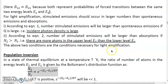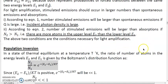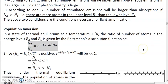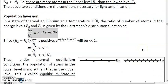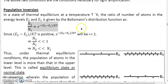To understand population inversion, first we will talk about what is meant by normal state. Based on that understanding of a normal state, then we will define what is meant by population inversion. According to the Boltzmann distribution function, which basically tells us how many atoms are there in the upper level and how many atoms are there in the lower level — that is what the Boltzmann distribution function tells us. And the function is given as n2 by n1 is equal to e raised to minus of e2 minus e1 upon kt.